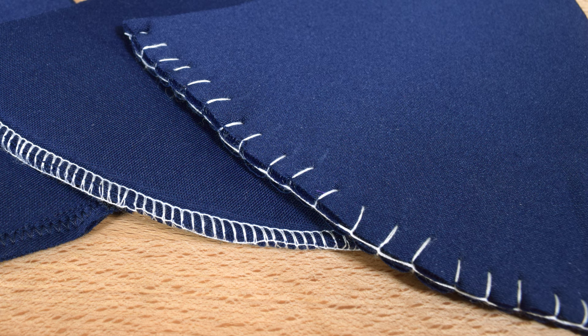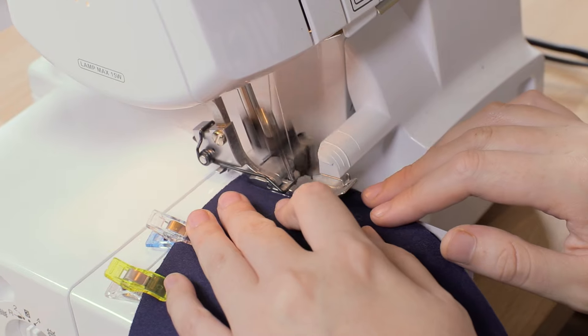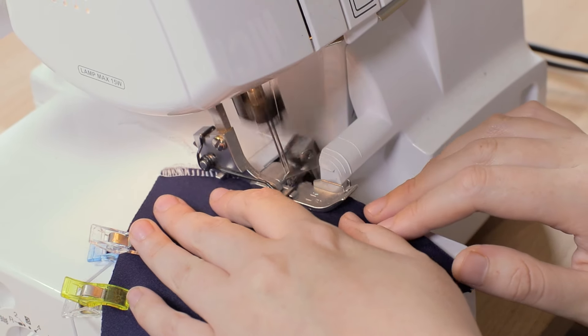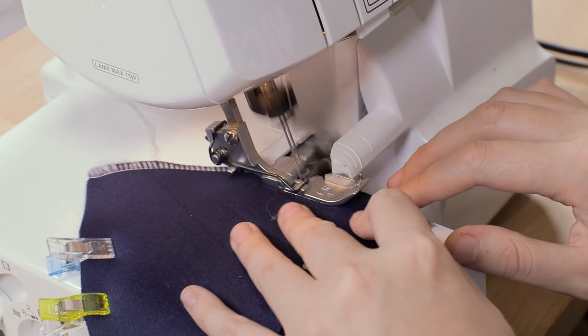An overlock stitch is a great way to hem the edges of fabric so they don't fray. You'll see this stitch on the inside of a lot of manufactured clothing. It is often sewn using a serging machine, but it can also be done by hand and I will show you how.